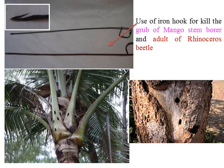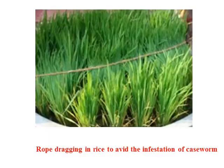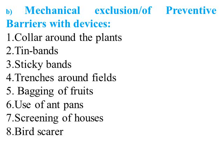Collection of insects with hand nets. An iron hook used for the removal of mango weevil and adult rhinoceros beetle — this is a very particular device. Rope dragging to avoid infestation of the rice caseworm. Mechanical exclusion using preventive barriers and devices, such as a collar around the plants, placing tin bands for coconut trees, sticky bands on grapes or custard apple, sticky bands on trenches around fields, bagging of fruits to prevent fruit fly attack, use of ant pans, and screening of houses.